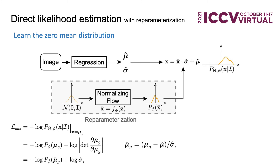DLE is feasible, but it's not good enough, because the training of the regression model totally depends on the distribution learned by the flow model. When we train the model from scratch, the distribution is far from correct, and it will damage the training of the regression model.